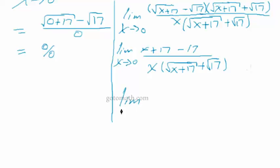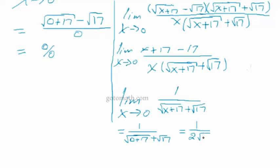So we can rewrite this limit as 1 over the square root of x plus 17 plus the square root of 17. Now we can go through and do our direct substitution for the last time. So we have 1 over 0 plus 17 plus the square root of 17. And this can be rewritten as 1 over, and this is going to be square root of 17, square root of 17. So that would be 2 square roots of 17.